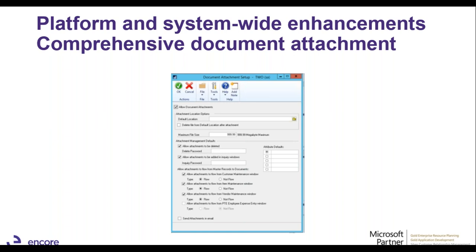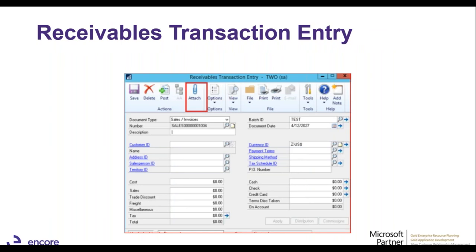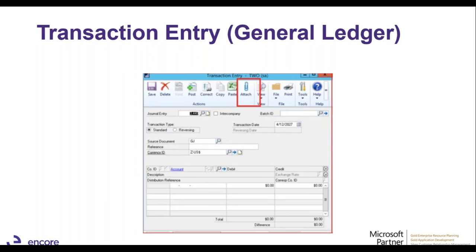You'll be able to look up supporting documents for transactions or master files. One of the new windows where document attachment has been added is the receivables transaction entry window. You can attach documents and track it from an audit perspective — tracking who attached the document, what time it was, and it's saved securely on your server. You can also track if somebody deleted or modified it.